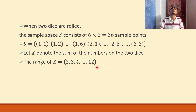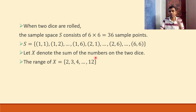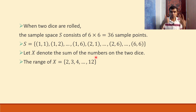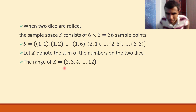Now let's start constructing the table. Capital X can be 2, 3, 4 up till 12. So there are 11 possibilities — two to twelve is 11 possibilities: 2, 3, 4, 5, 6, 7, 8, 9, 10, 11, 12.